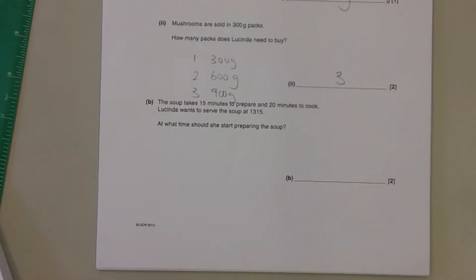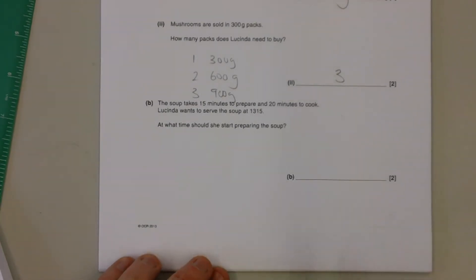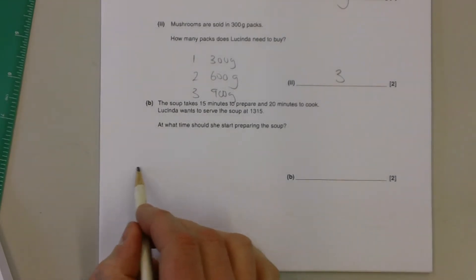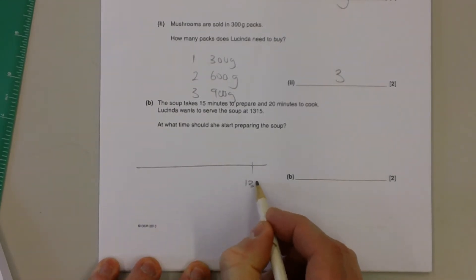And then finally, the soup takes 15 minutes to prepare and 20 minutes to cook. Lucinda wants to serve the soup at quarter past one. At what time should she start preparing the soup? There's where it's got to be finished.